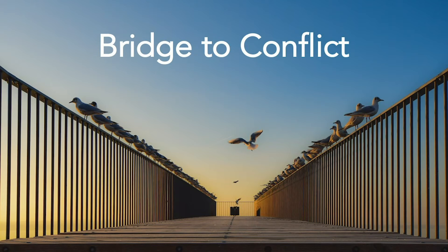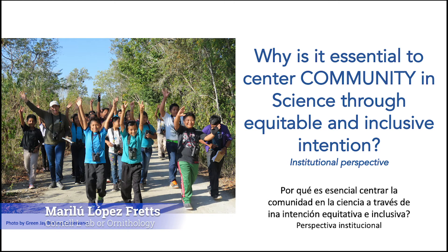Bridge to Conflict: We found that in order to build trust, commonalities must be found first. As commonalities are identified, progress begins to move forward based on what you and your partner share. The community bridge to conflict then allows you to address the more difficult issues. Finding commonalities, building trust, and then tackling tougher issues is a possible solution to progress for you and your partners.